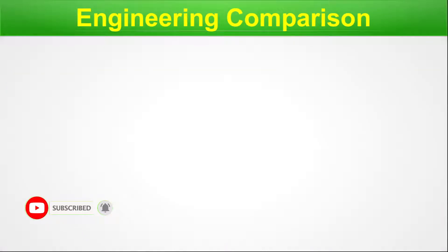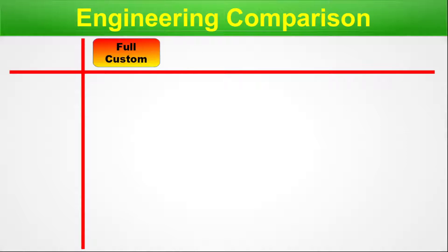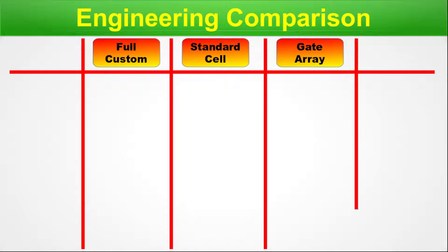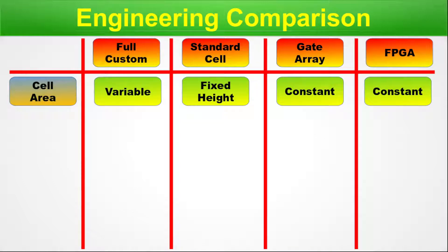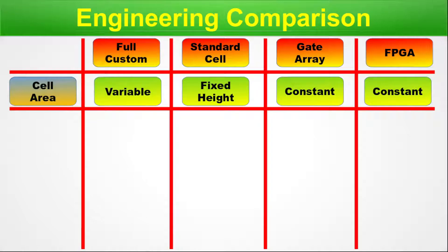Now the engineering comparison — how an engineer views each chip type. Columns remain full custom, standard cell, gate array, and FPGA, but the parameters reflect an engineer's perspective. Cell area: full custom is variable; standard cell has fixed height (tracks of fixed height, though families may differ); gate array is constant; FPGA is variable because it is extremely handcrafted. Cell families: full custom is variable (cells made as per need); standard cell is variable with certain prefixed categories; gate array is constant; FPGA is programmable.